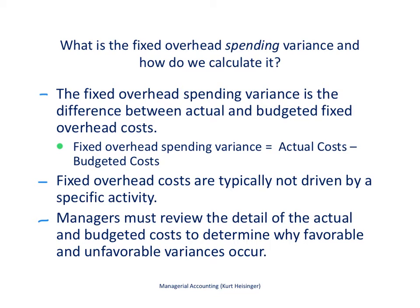Let us start with the fixed overhead spending variance — what it is and how we calculate it. The fixed overhead spending variance is the difference between the actual fixed overhead costs and the budgeted fixed overhead costs. So it is pretty straightforward: what are the actual costs associated with fixed overhead, what did we expect those costs to be, and we take the difference. Whatever that difference is, that is our spending variance.